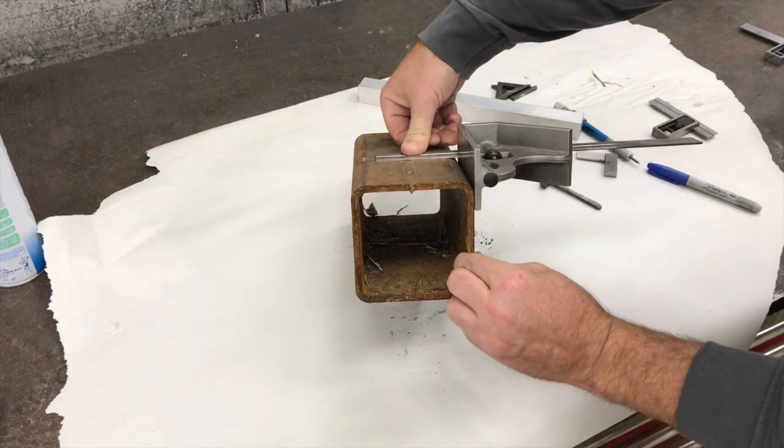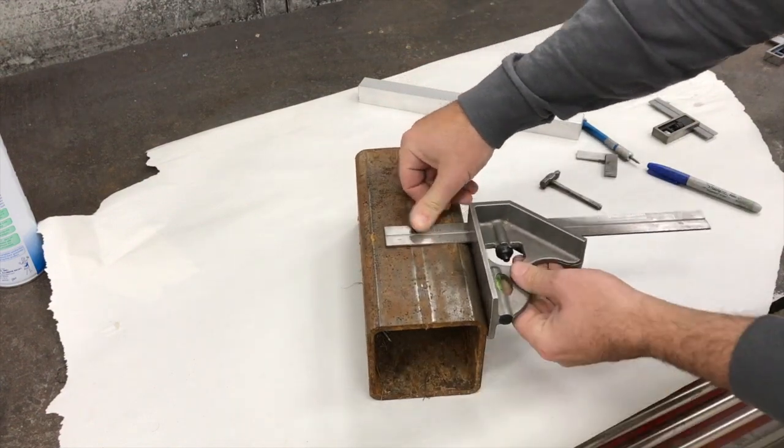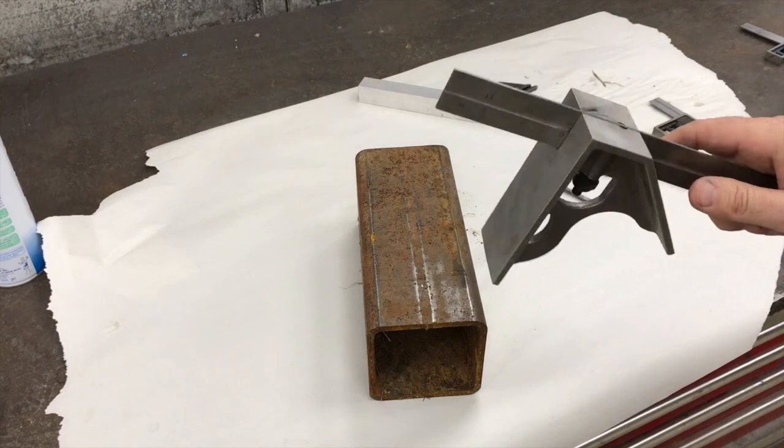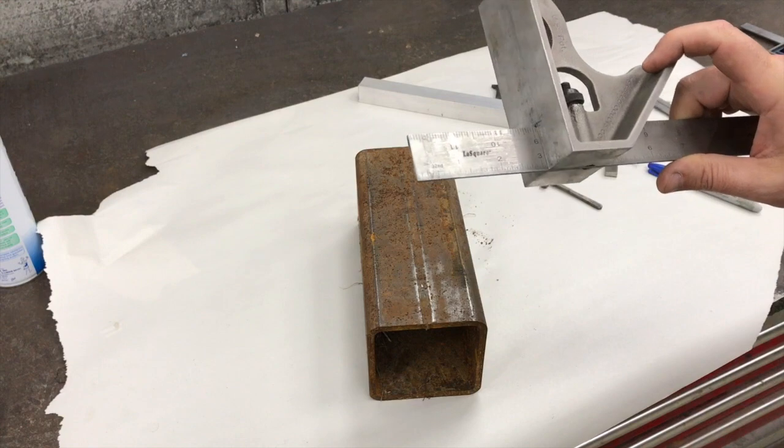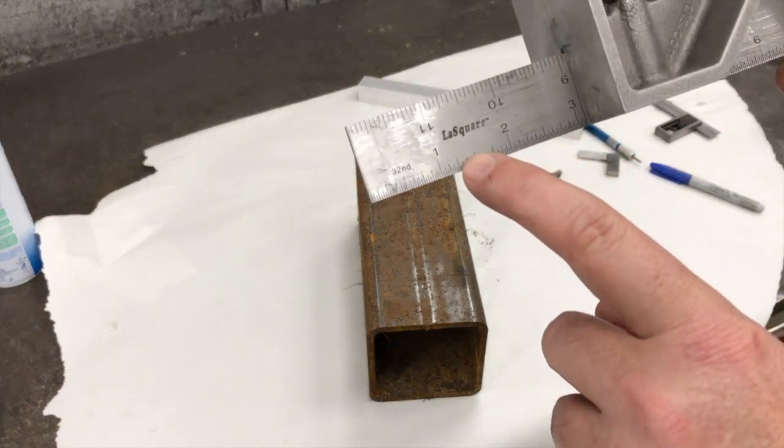Well, this thing will give you really positive squaring against the surface because it's got so much more length down here to reach past where that radius is. I think Jody still sells these on his website at weldingtipsandtricks.com if you want to check that out. That's called the Lust square - you can see the brand name of it there.